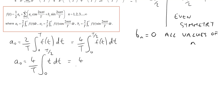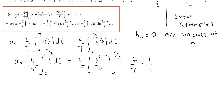So we've just got a linear function to integrate. That integrates up to t squared over 2, and then the limits are 0 and T over 2. That gives me 4 divided by T, and there's a factor of a half from inside the bracket, so t squared evaluated at T over 2 gives me T squared over 4. We can see that there's a cancellation of the 4 and then also a cancellation of the T, that gives me a0 equals T over 2.